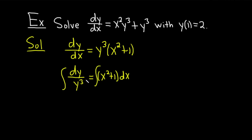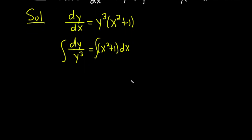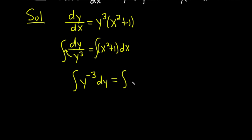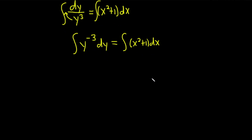The integral on the left needs to be rewritten. Let's bring the y cubed upstairs so we have y to a power and can use the power rule. This becomes the integral of y to the minus 3 dy. And on the right we have the integral of x squared plus 1 dx.